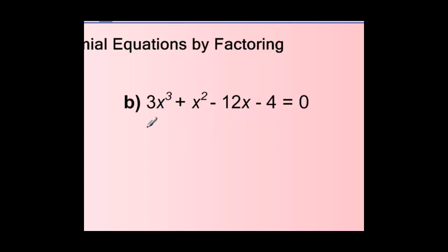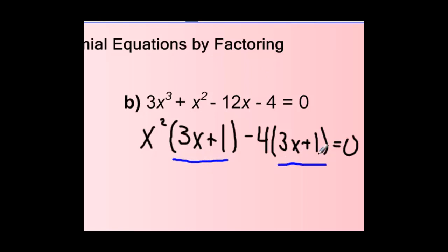I could try and factor by grouping, by pulling out a common factor in the first two terms, and a common factor in the last two terms. In the first two terms, I notice that I have a common factor of x squared. That leaves me with 3x plus 1. And in the last two terms, I have a common factor of negative 4. And that leaves me with 3x plus 1. And we know that this factoring by grouping works, because when I pull out those common factors from the first two and the last two terms, what I have in the brackets are equal to each other.